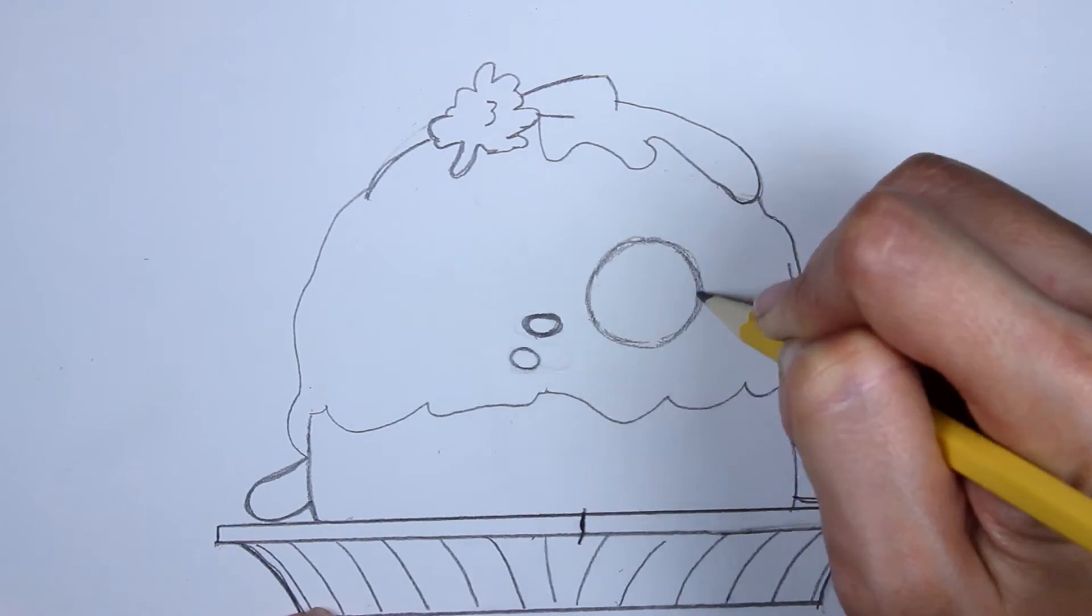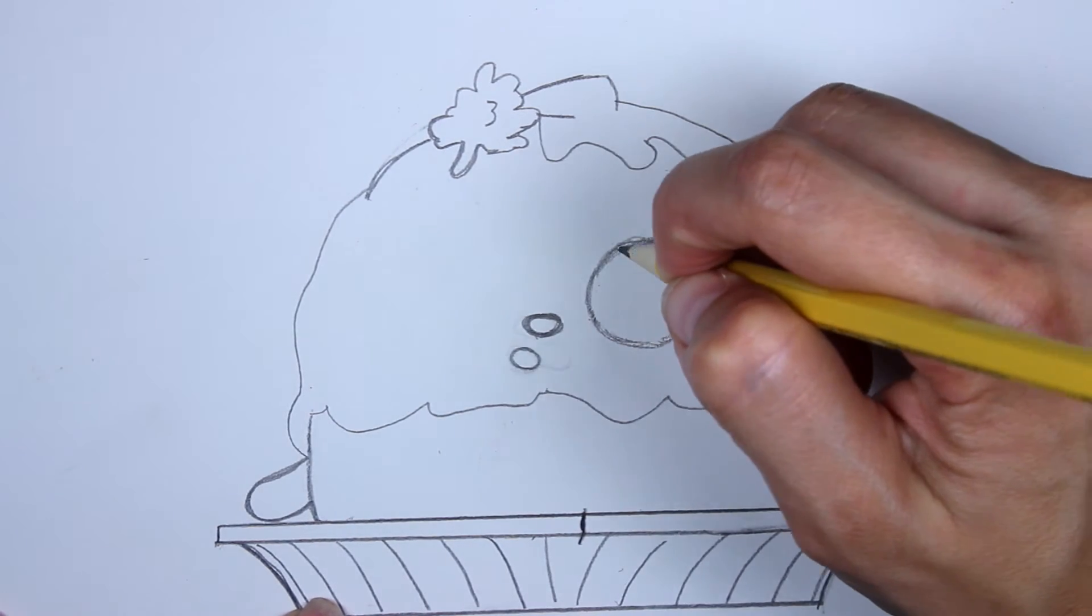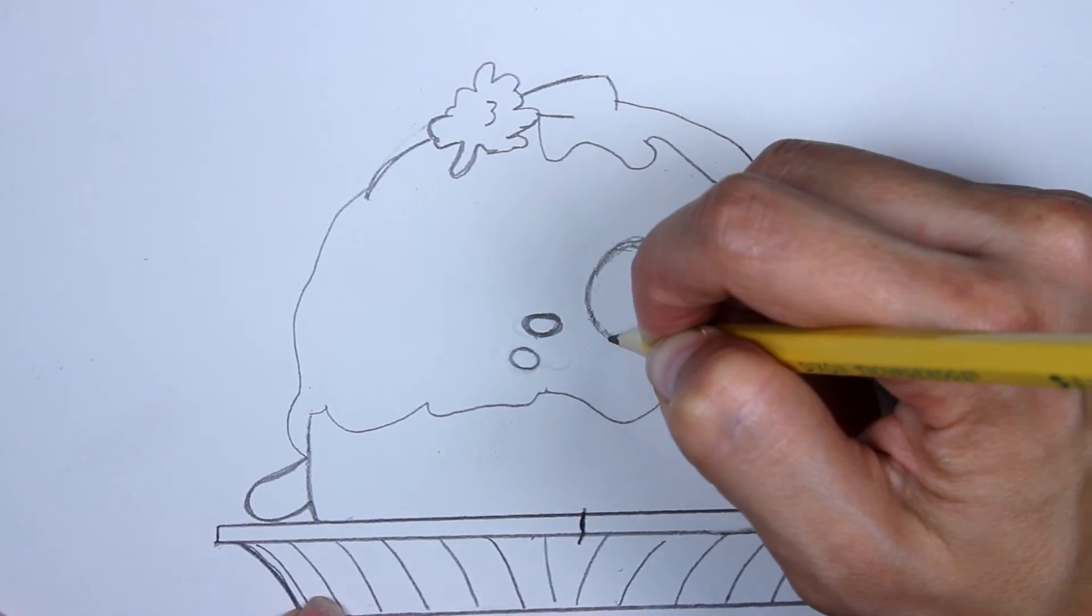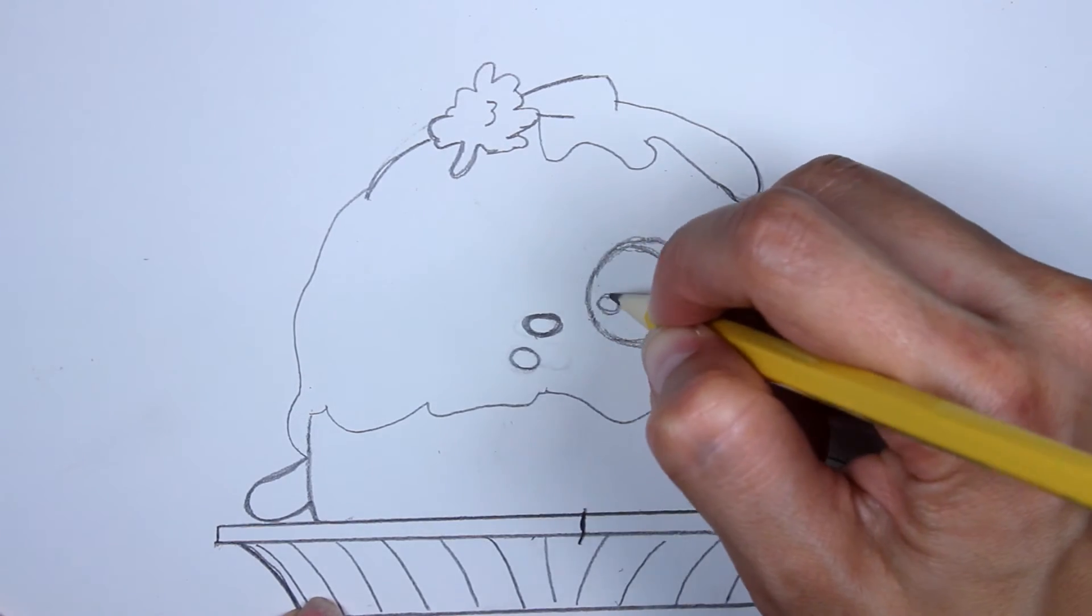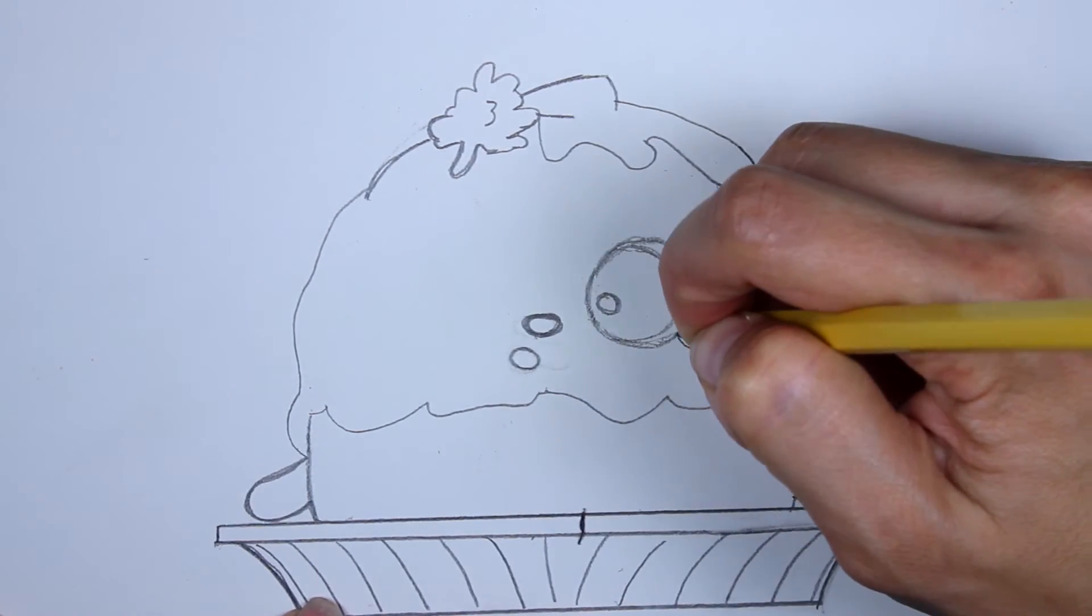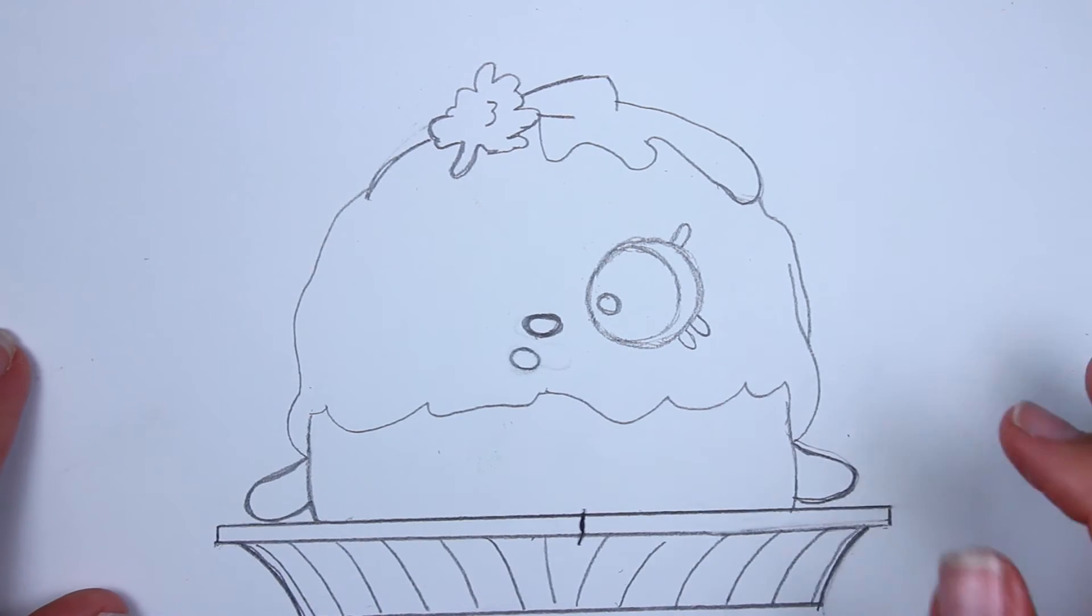Okay? And then his eyes leave a space from the nose and make a circle. Take your time making the circle. I don't have anything to trace, so I have to freehand it. So it takes a bit of time, which is why I speed it up. Inside here, I'm making a semi-circle and a small circle, as well as three eyelashes.